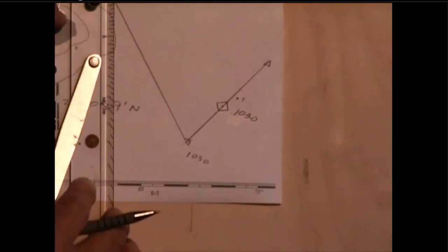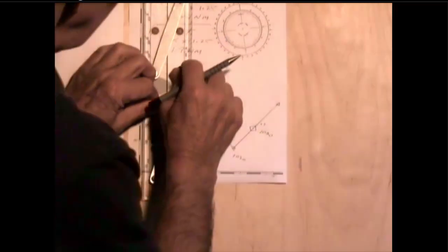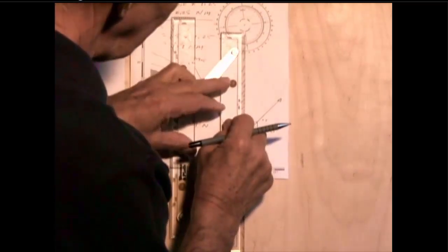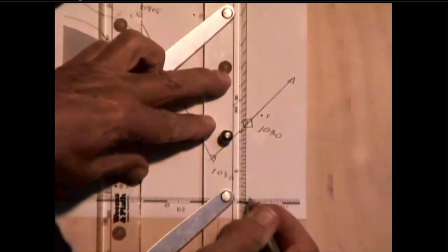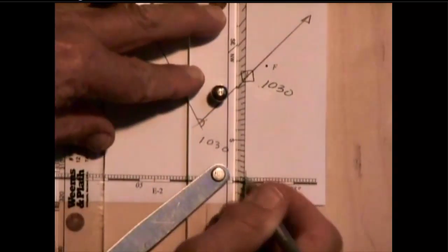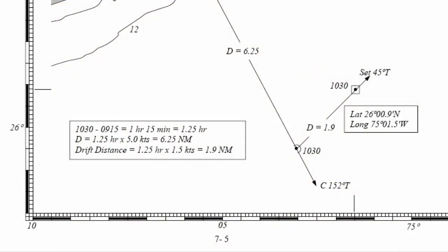The longitude of this point is done the same way as we've done it before. I line up my parallel rules properly, bring this through the EP point, estimated position point, and draw in a little mark there. This is longitude 75 degrees, 01.5 minutes west. And that's the answer to that problem.